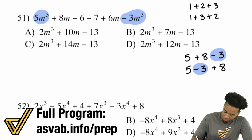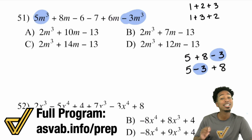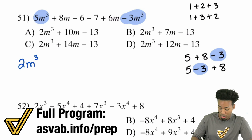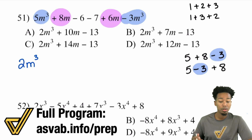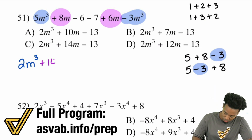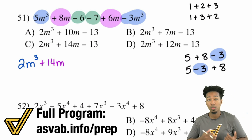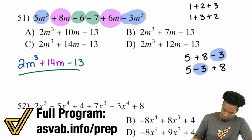So for Problem 51: 5m³ minus 3m³ — combine those: 5 − 3 = 2, giving us 2m³. Next, any m² terms? No. Any m terms? Yes — 8m plus 6m: 8 + 6 = 14, giving us +14m. Finally, the constants: −6 and −7 — taking away 6 and then 7 means you take away a total of 13, giving us −13. Answer: 2m³ + 14m − 13, answer choice C.